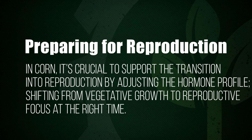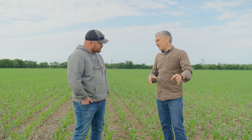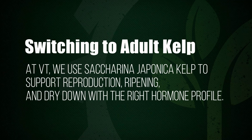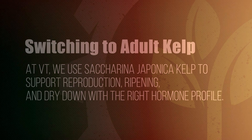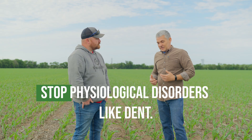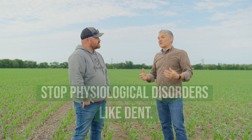It's really important, particularly on corn, to switch into the transition for reproduction now — we want to change our hormone profile. In the beginning juvenile and baby stages, it's great to be cytokinin-dominant and use ascophyllum nodosum. But as soon as we hit that VT timing, we've really got to make sure we switch to an adult kelp — Saccharina japonica. It's full of the hormones that support reproduction, ripening, finish, and dry down. By switching to these kelps we're able to stop things like tip back, ensure good pollination without blanking, and address physiological disorders like dent.